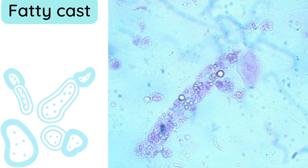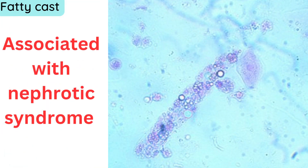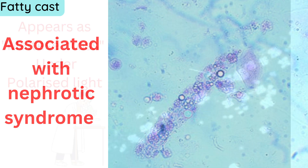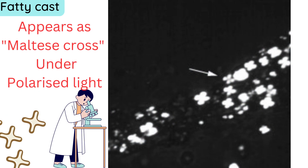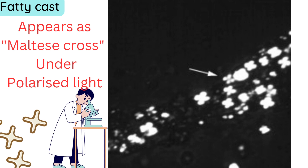Fourth: fatty casts. These are found in nephrotic syndrome. Fatty casts exhibit a characteristic appearance known as the Maltese cross under polarized light microscopy.